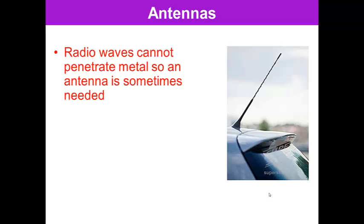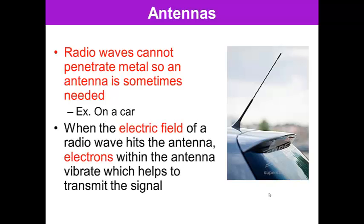Antennas. Why do you need an antenna in your car? And what happens when that antenna is broken? I've had several vehicles that don't have a very good working antenna, and I can attest to the fact that that makes long car rides pretty crappy. Radio waves cannot penetrate metal, so an antenna is sometimes needed. For example, on a car. When the electric field of a radio wave hits the antenna, electrons within the antenna vibrate, which help transmit the signal. So it amplifies the signal.